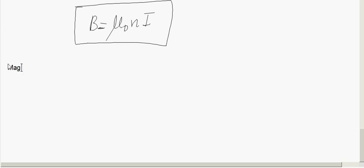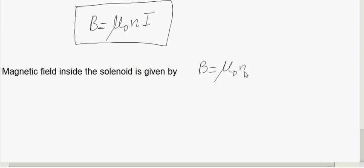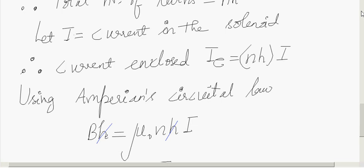Magnetic field inside a solenoid, B is equal to μ₀N into I. So here B is the magnetic field, μ₀ is the permeability of free space, N is the number of turns per unit length of the solenoid, and I is the current in the solenoid. Used Ampere's law to determine this and considered a rectangular loop. And also, the assumption made was the field outside the solenoid is zero. Hope you understood this derivation.